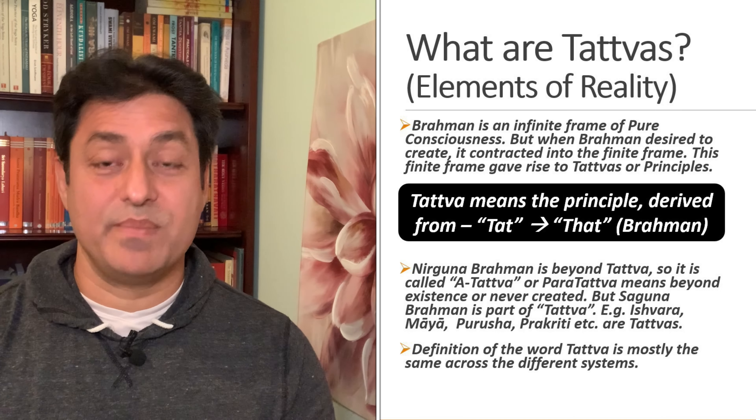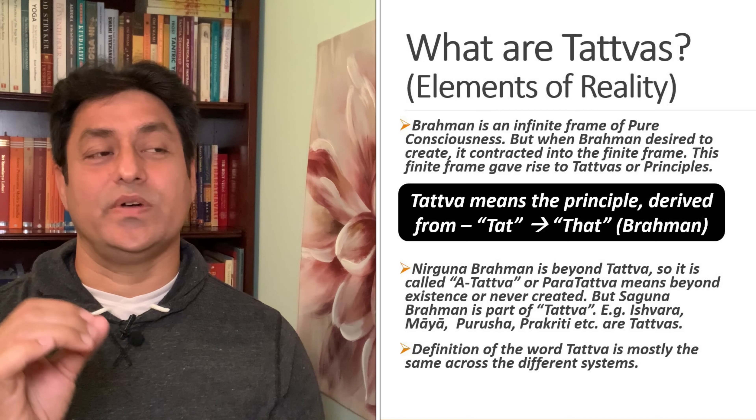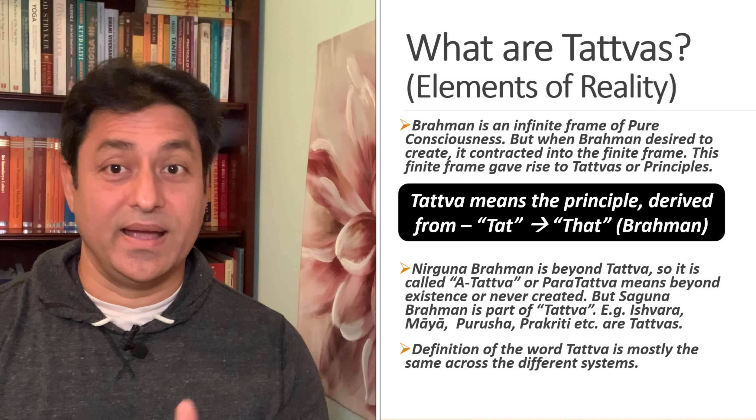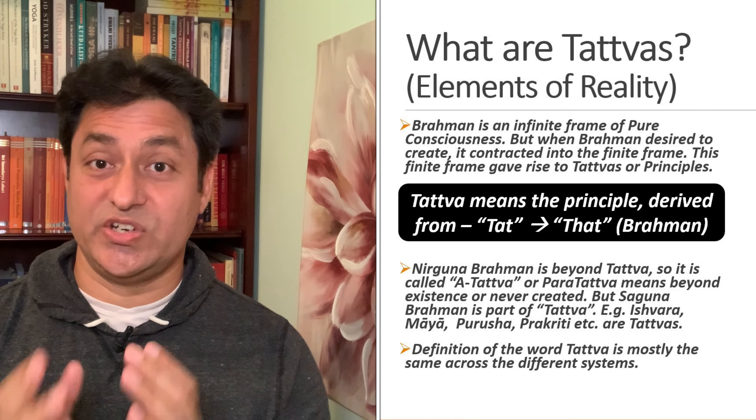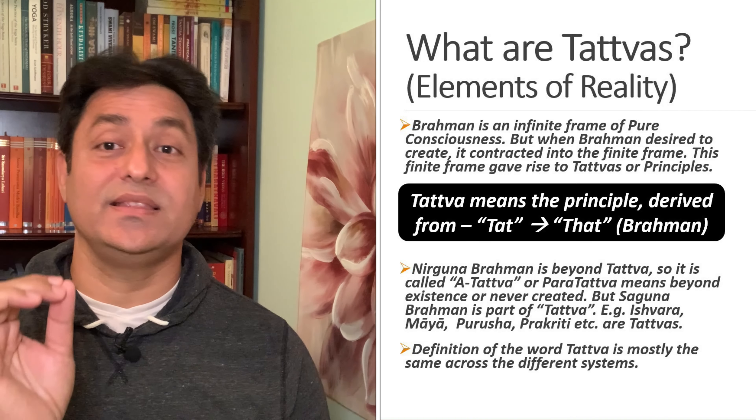Just to be clear, Nirguna Brahman is beyond Tattwa. So it is called Atattwa or Paratattwa, which means beyond existence or never created. But Saguna Brahman is part of Tattwa — like Ishwara, Maya, Purusha, Prakriti, etc., are Tattwas. The definition of the term Tattwa is mostly the same across different systems.